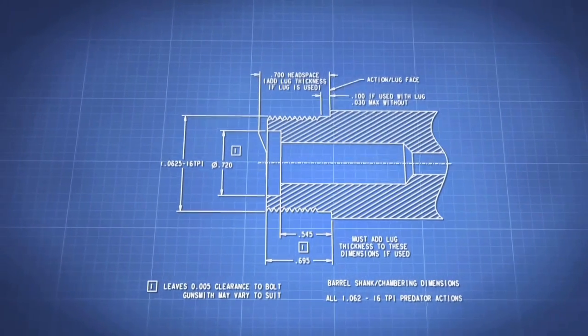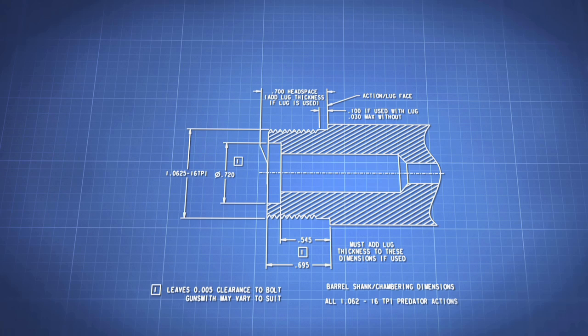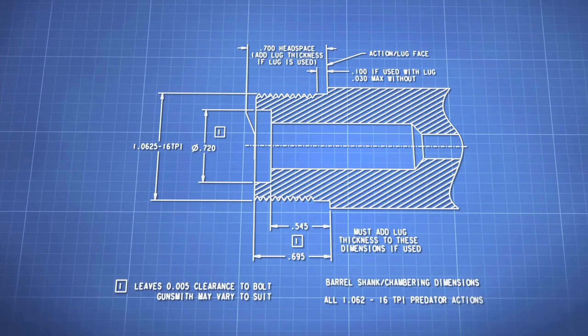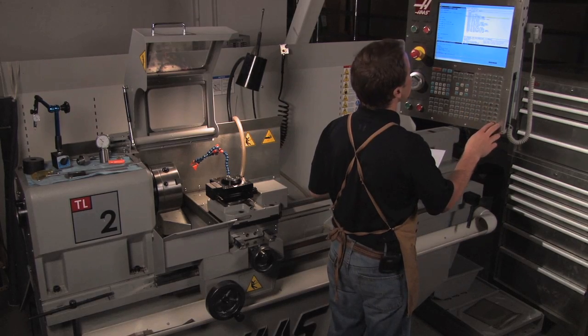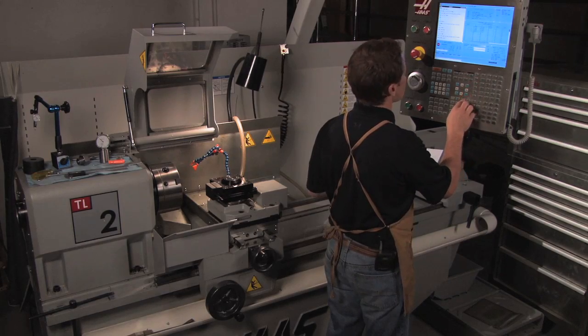The process starts with a thread specification print. These numbers determine the final dimensions and allow the programmer to write the G-code that controls the CNC machine cutting parameters.